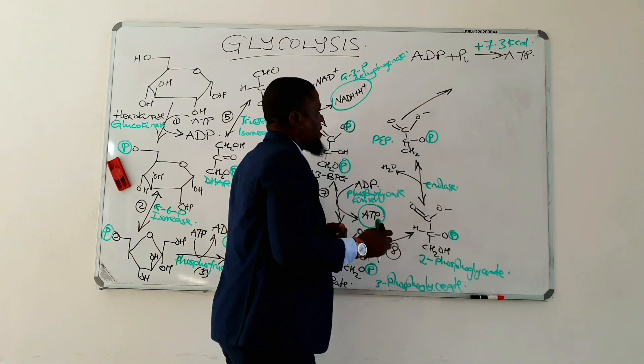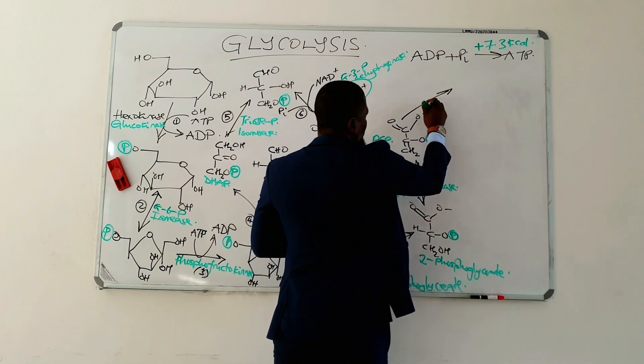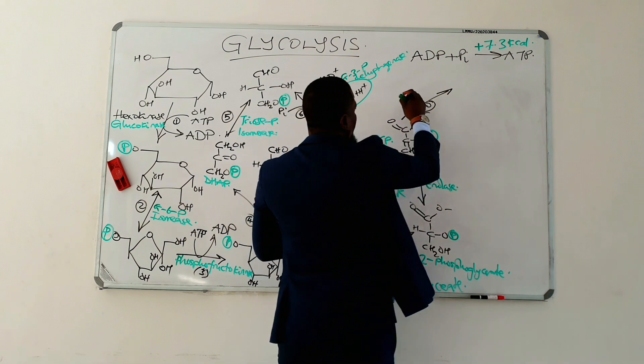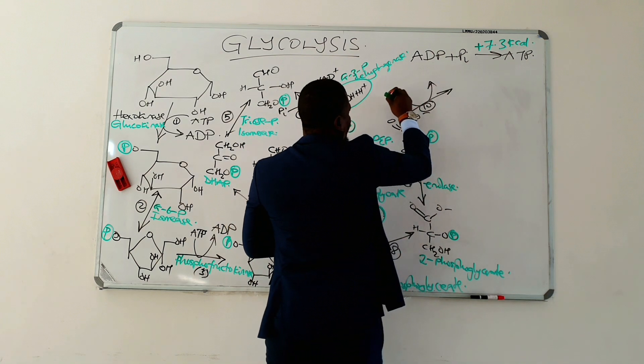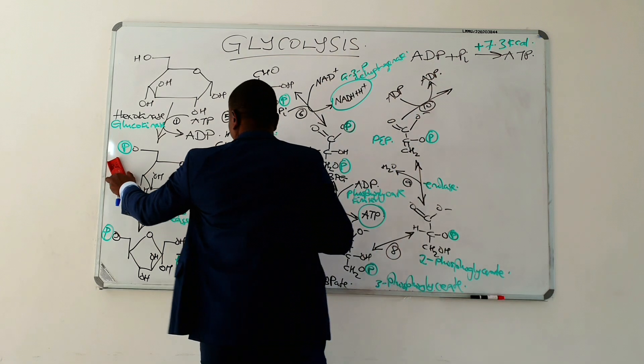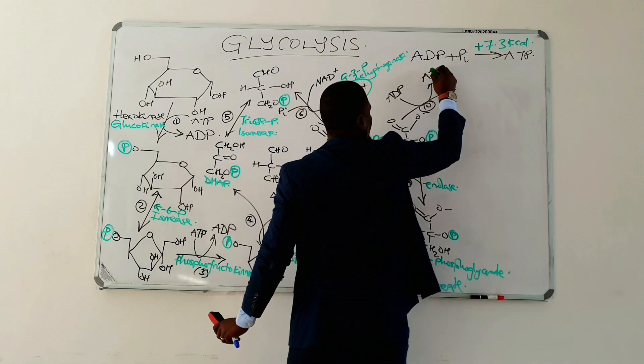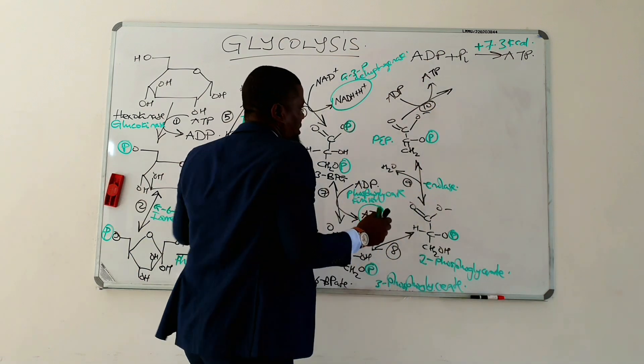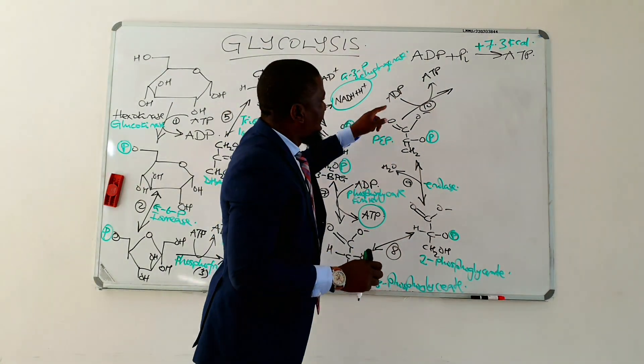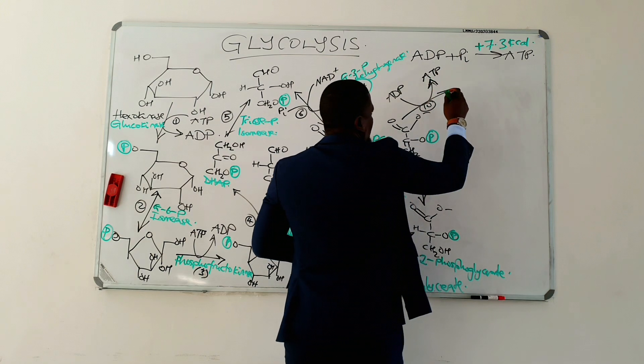Therefore, reaction number 10 would actually produce ATP from ADP. This phosphate attaches there, and the end product is going to be pyruvate.